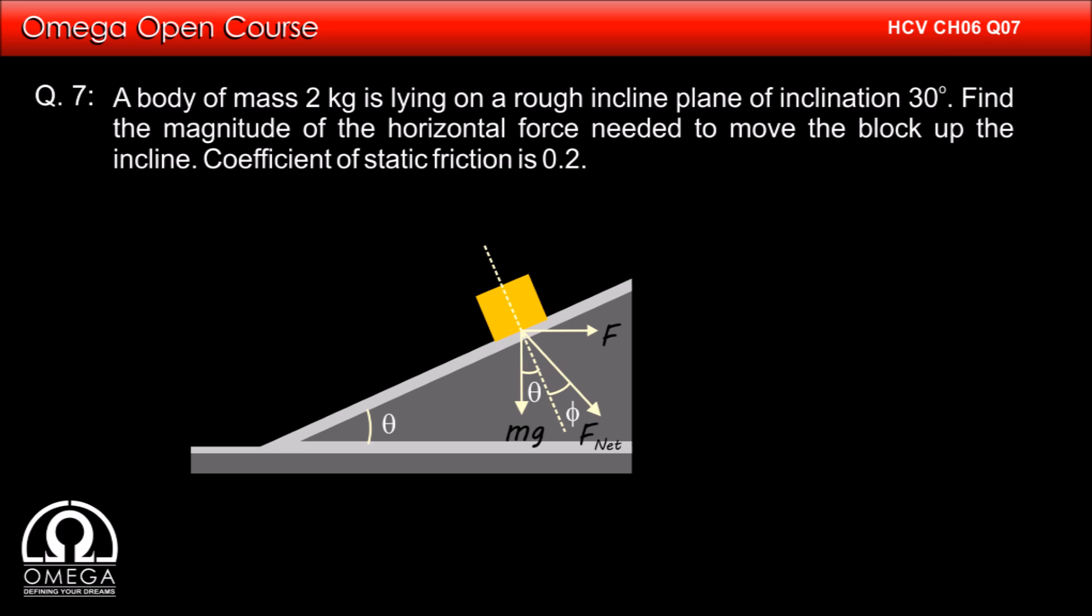Thus F net makes an angle theta plus phi with the vertical, and therefore F divided by mg must be equal to tan of theta plus phi, or F equals mg tan of theta plus phi. This implies F equals mg times tan theta plus tan phi divided by 1 minus tan theta tan phi.